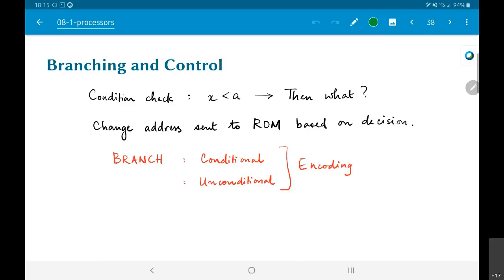So what does a branch instruction do? It basically changes the address that is sent to that sequencing ROM based on some decision. What is this decision? In our case, the decision would be that comparison operation which checks whether x is less than a. It would set some flag somewhere in the system and based on that flag I would decide either yes I need to branch back to instruction number zero and repeat the entire thing, or no I can just proceed further from here, or I could even have it the other way. If the condition is not satisfied I actually need to jump somewhere else.